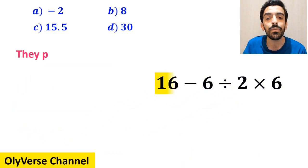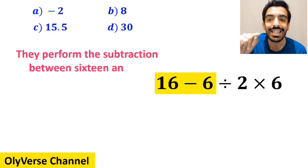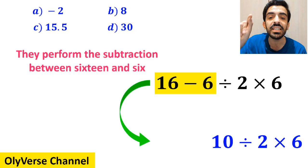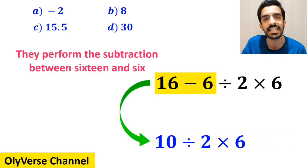In the next step, they perform the subtraction between 16 and 6 and simplify this expression to 10 divided by 2 then times 6.